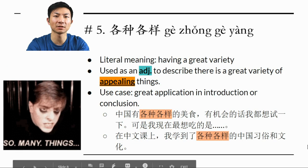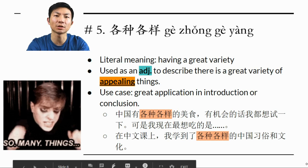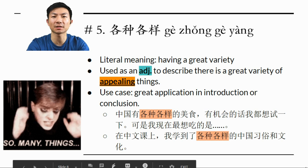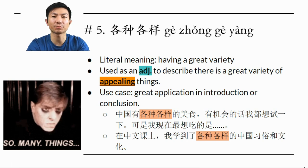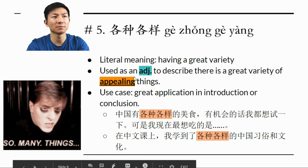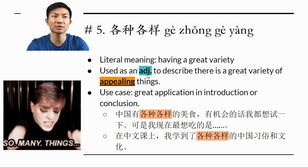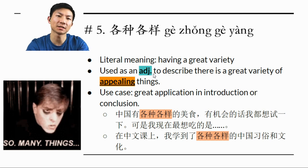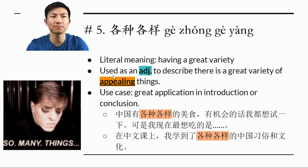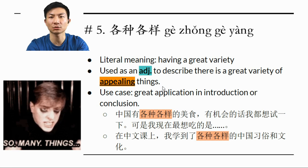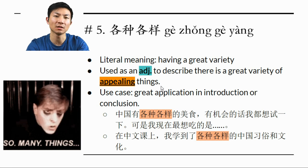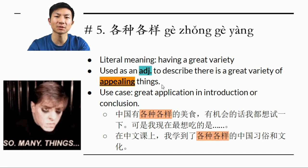The fifth and last idiom I'm going to introduce today is 各种各样. It's also a pretty basic idiom that most people should know. It means 'having a great variety of something.' It is used as an adjective — you put it in front of a noun: 各种各样的 something. You use it to describe a great variety of appealing things. It's a positive idiom, usually used to describe something that has a good variety.